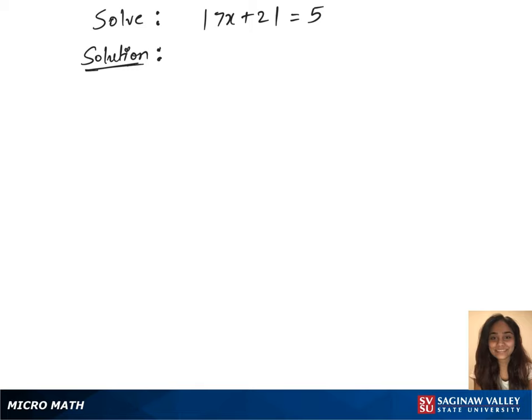To solve this question, we see that this absolute value equation is equivalent to 7x plus 2 equals 5, or 7x plus 2 equals minus 5. We'll solve each of these equations separately.